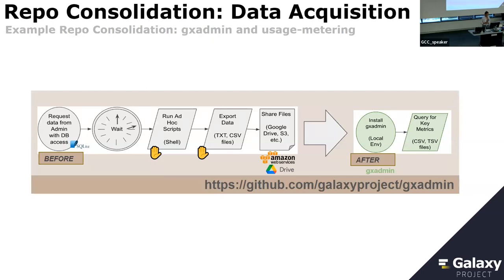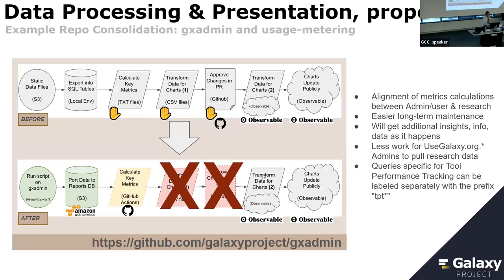In the case of your individual Galaxy instance, previously you would have to download the data from a network admin and then run it alongside, with various manual steps. We have gotten rid of those manual steps, at least on the research side. The process is now much more streamlined: basically install GX admin, query for some key metrics. There are new queries now in GX admin, and we anticipate adding more to get some of those tool metric performance tracking information.